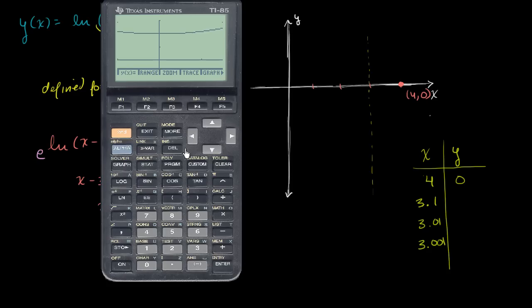Let's get our calculator out and let me go to the main screen. And so let's take the natural log of 3.1 minus 3. We get negative 2.3. And I'll just round to the tenth.